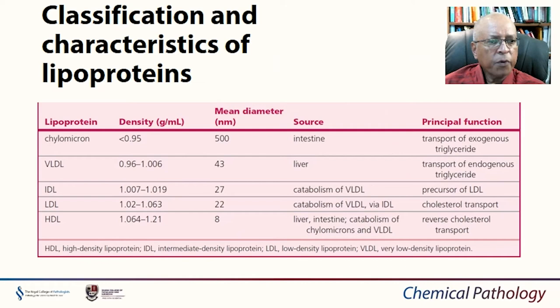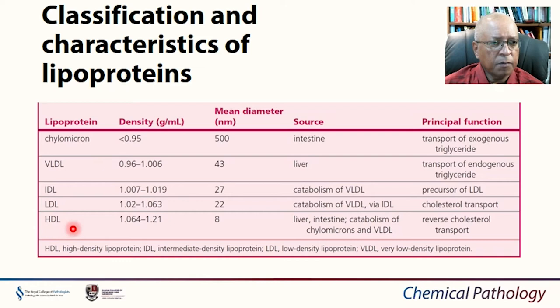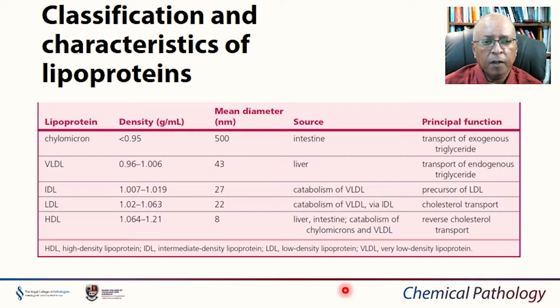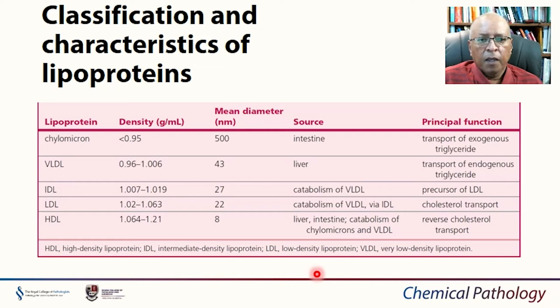Looking at the classification of lipoproteins, they range from very low density to very high density. The lowest density lipoprotein is the chylomicron, then we have VLDL, IDL, LDL, and HDL. These have different sizes — chylomicrons are quite large at 500 nanometers and can actually be seen with the naked eye at high concentrations in serum. They are classified on the basis of their densities as demonstrated by ultracentrifugal separation, and density increases from chylomicrons to HDL. There are also subtypes — for example, very small dense LDL is associated with an increased risk of cardiovascular disease.